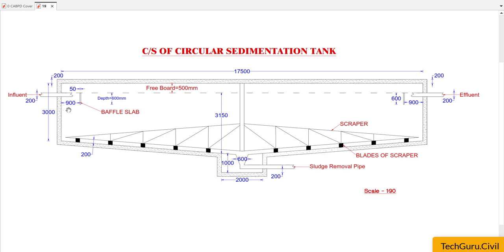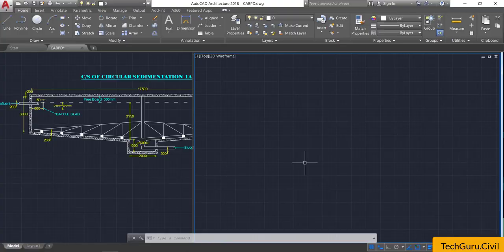For treatment, a scraper will be provided with blades at the bottom. At the bottom there will be a sludge tank of dimension 1000 by 2000 mm, which will be fitted with a sludge removal pipe. Now let's start the drawing and go to AutoCAD.